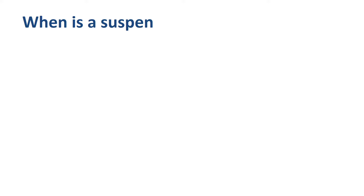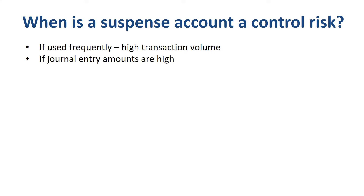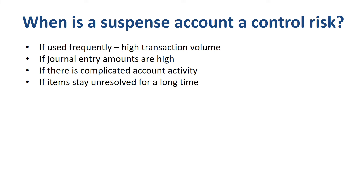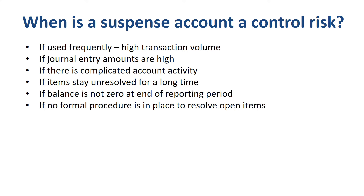When is a suspense account a control risk? First, if the suspense account is used frequently — do you have the right data feeds to correctly classify entries, and properly qualified people making the entries? Second, if journal entry amounts are high. Third, if there is complicated account activity which is hard to follow. Fourth, if items stay unresolved for a long time — this could indicate insufficient staffing levels or insufficient focus. Fifth, if the balance of the suspense account is not zero at the end of the reporting period. Sixth, if no formal procedure is in place to resolve open items.